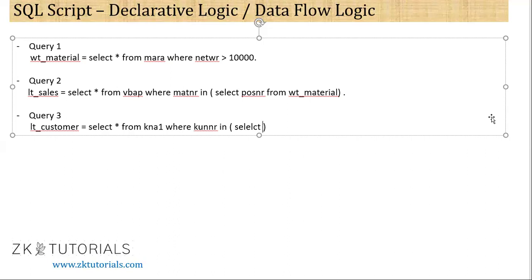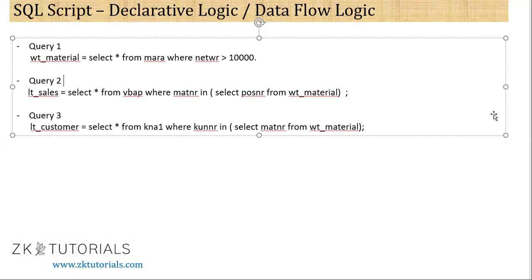Select MATNR from WT material. So the actual statements will be closed by semi-colon. This will be closed by semi-colon, this will be semi-colon. So my select query is there.